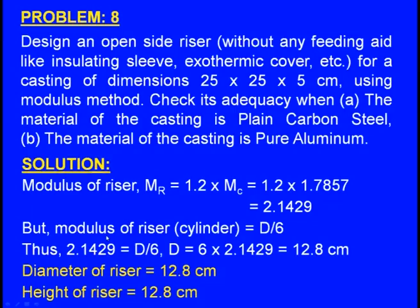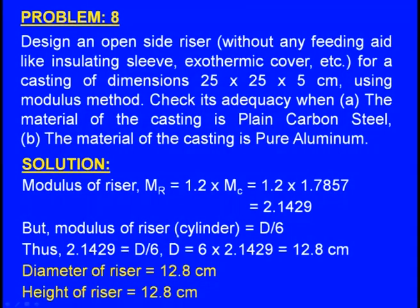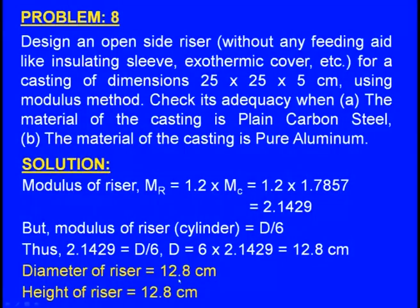For a cylindrical riser where the diameter equals the height, the modulus is d/6. Thus, d/6 = 2.1429, giving d = 12.8 cm. So the diameter of the riser is 12.8 cm and the height is also 12.8 cm. This is the design of the riser obtained by the modulus method.